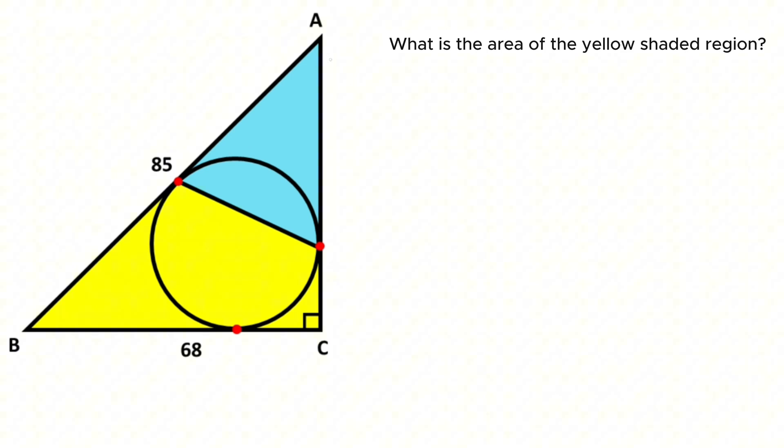First, I want to represent this length with a. Therefore, for triangle ABC, if we apply the Pythagorean theorem, we get the value of a. So a squared plus 68 squared equals 85 squared. Therefore a squared equals 85 squared minus 68 squared, so a squared equals 85 minus 68 times 85 plus 68. Therefore a squared equals 17 times 153.